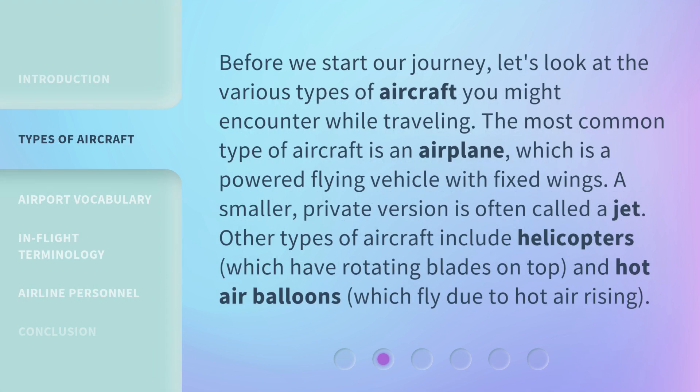Before we start our journey, let's look at the various types of aircraft you might encounter while traveling. The most common type of aircraft is an airplane, which is a powered flying vehicle with fixed wings. A smaller, private version is often called a jet.